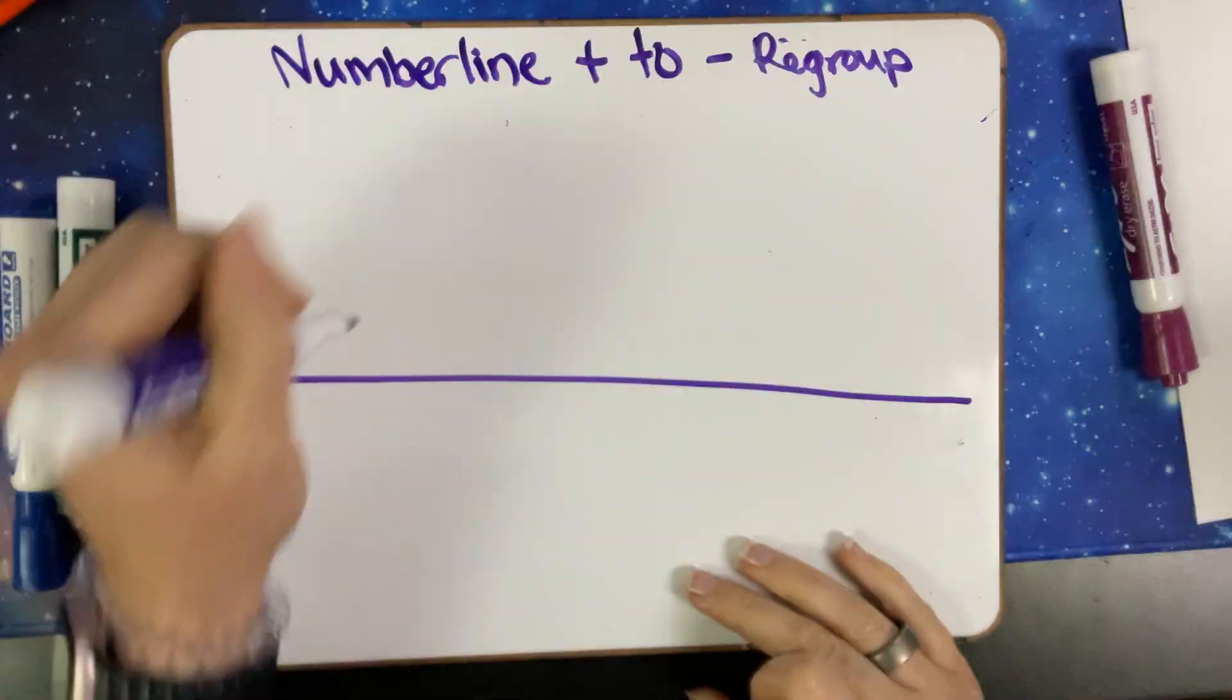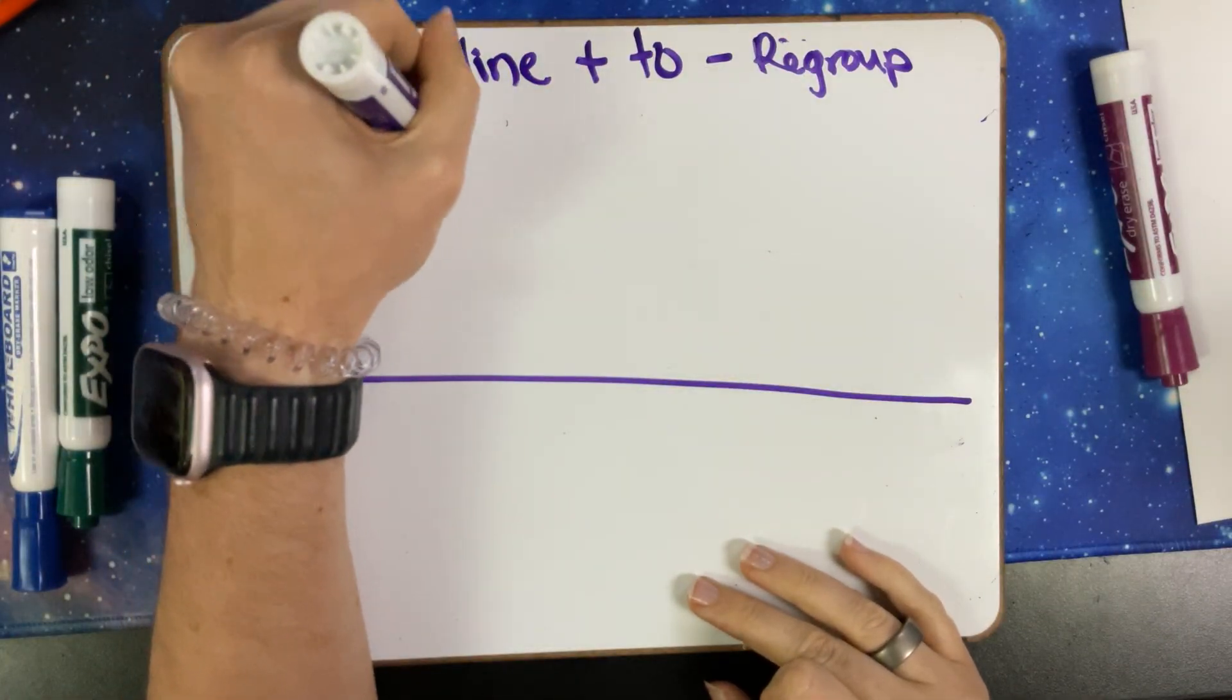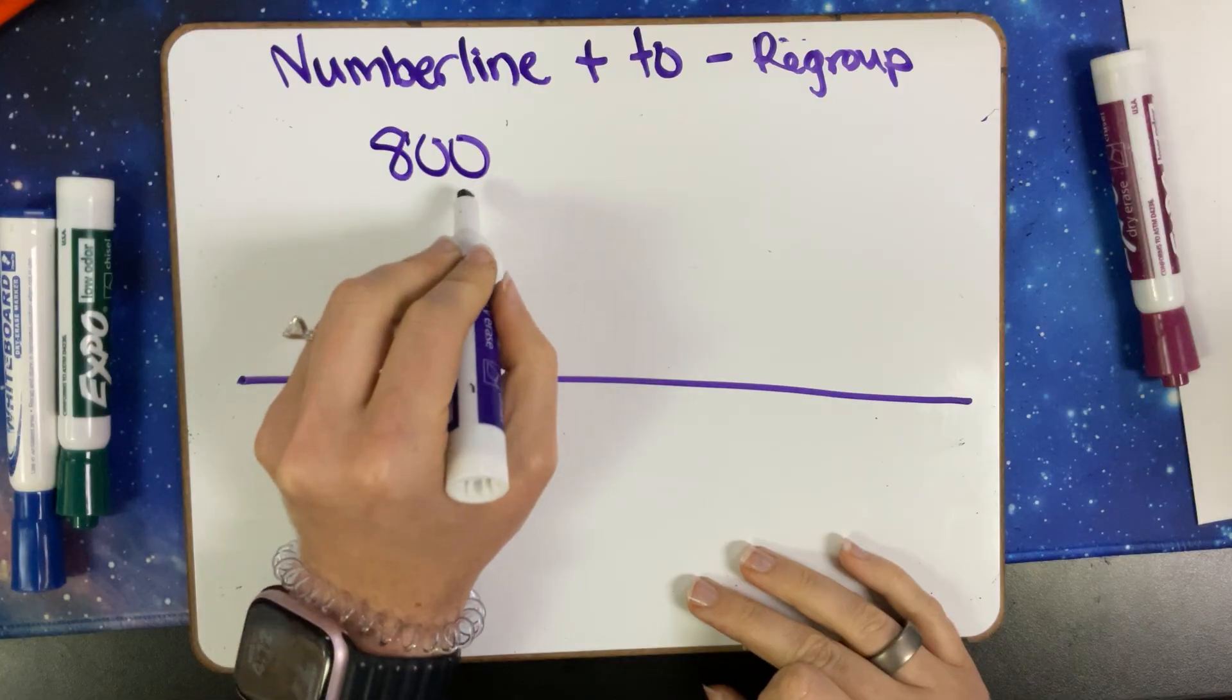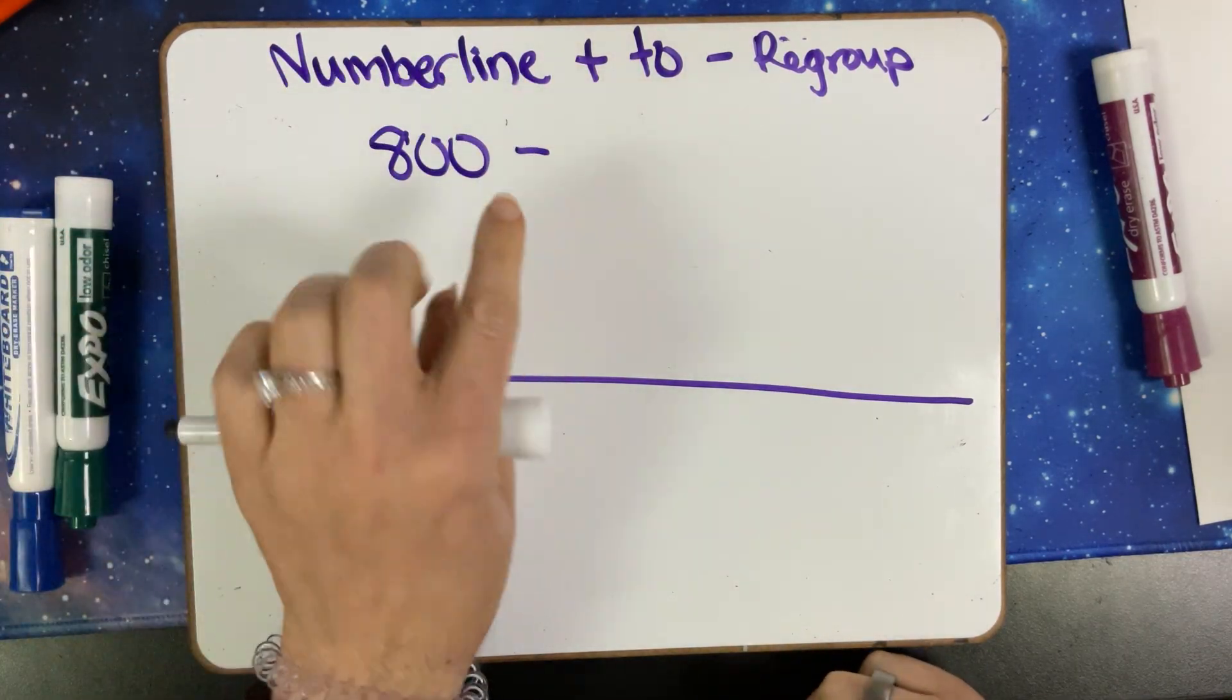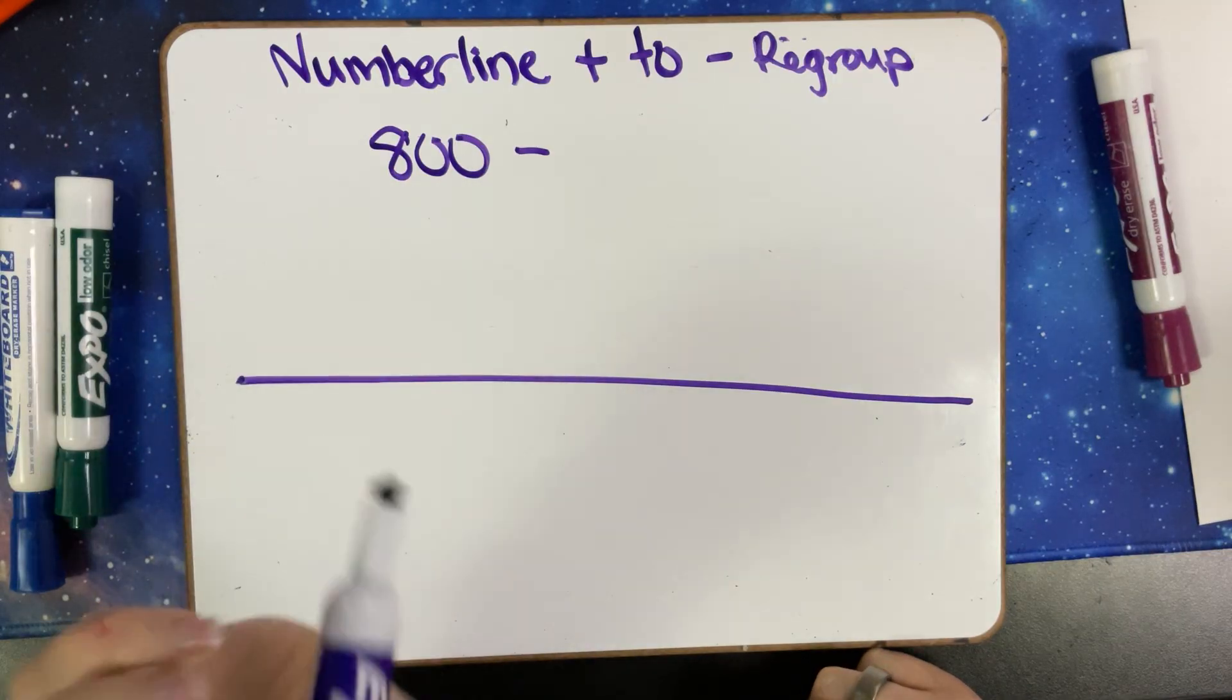For our number line, when we add to subtract, if we're going to regroup, our starting number will need to start at a lower place. So with 800, you're always going to have to regroup when you're subtracting because you have lower values in each place.